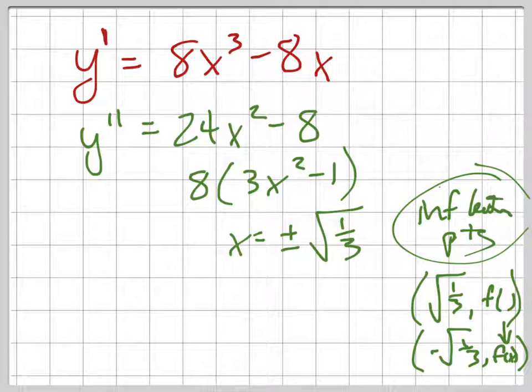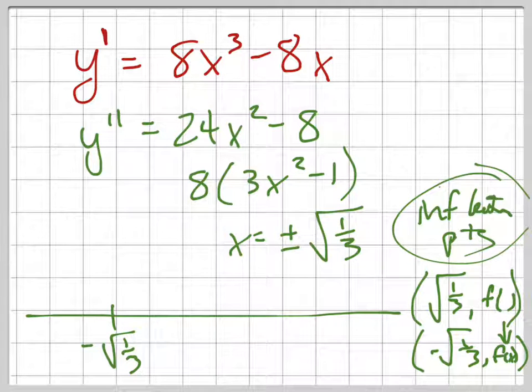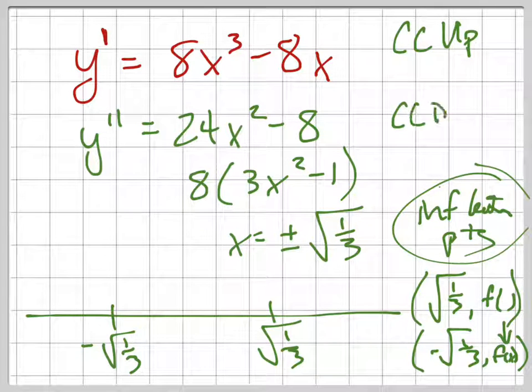Okay, so, but they're asking us where it's concave up and concave down. So let's do that sign analysis again. Here's negative square root of 1 third, and here's positive square root of 1 third. So those are where the double derivative is 0. If the double derivative is positive, it's concave up. And if the double derivative is negative, it's concave down. So we're going to find that out by plugging in values.